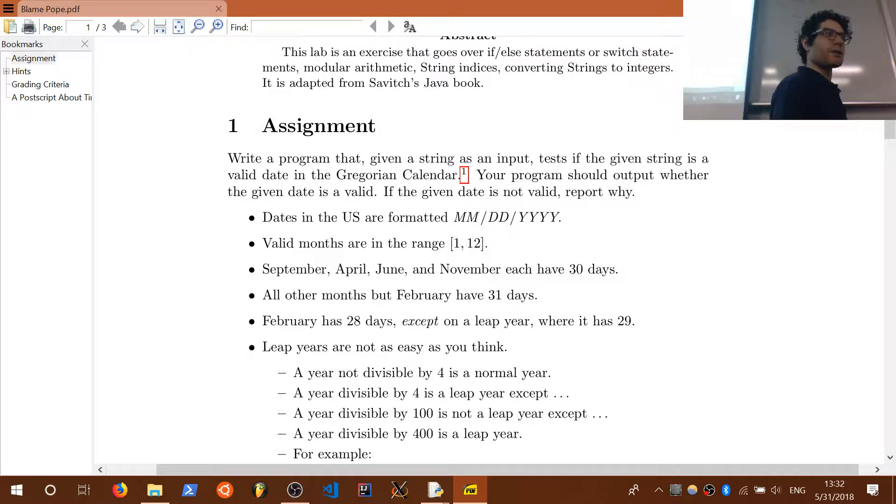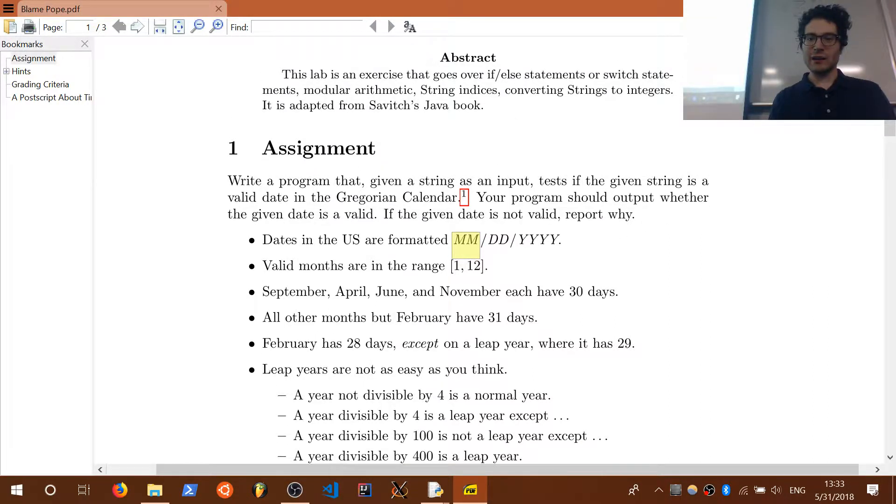So this assignment is fairly straightforward. You're going to test whether a given date is a valid date. You ask the user to input a string and it tests if that string is a date. Specifically it tests if it's month, month, slash day, day, slash year, year, year, year. And is that a valid date? Like for instance, the 13th month, month 13, 25 days, 1987 is not a valid date. April 50th, whatever the year is, is not a valid date. So if the date is not valid, you want to report why.